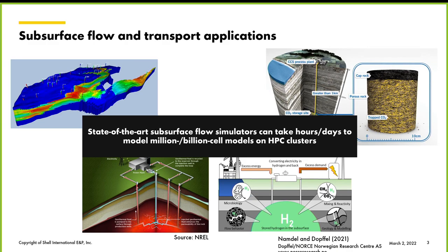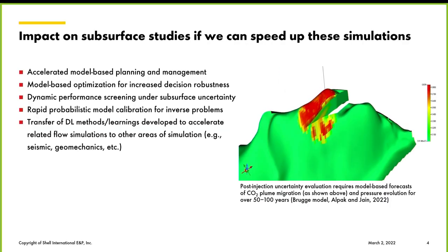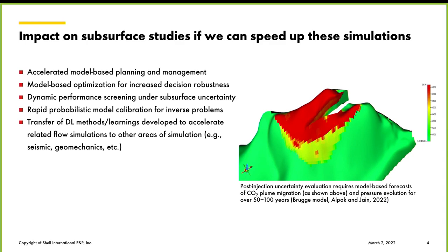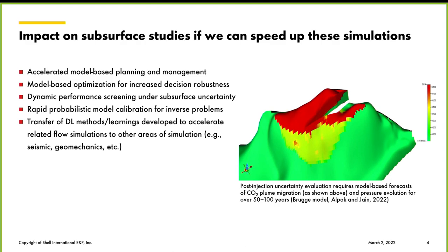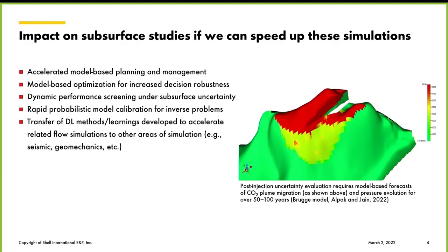It is imperative to develop surrogate models that can improve the time-to-solution with less computational resources. Here on the right, you're looking at a picture of a simulation showing how CO2 plume migration evolves over time. For projects like this, a subsurface uncertainty evaluation over 50 to 100 years will take at least thousands of simulations. If we can speed up these simulations by a factor of 10³ or 10⁴, we would create huge impact in accelerated model-based planning, decision robustness through optimization, dynamic performance screening, rapid probabilistic model calibrations, and transfer learnings to related problems like seismic, geomechanics, CFD, or pore-scale studies.